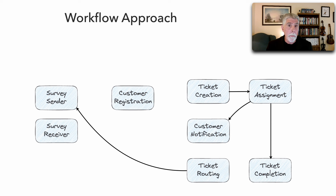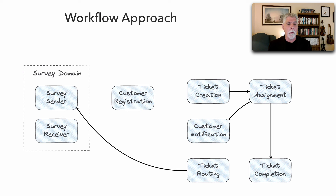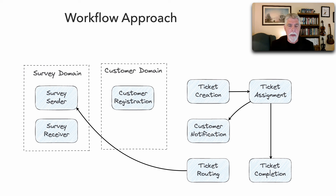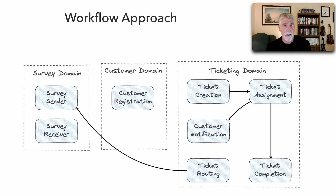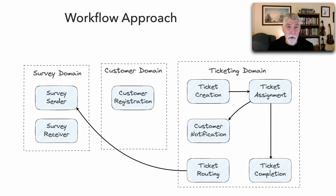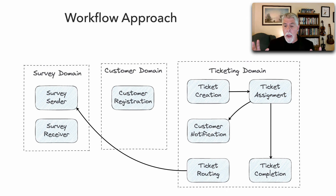Once we start identifying these components, we can build our logical architecture diagram showing user interactions and interactions between components. We can then group components by domain — a survey domain, a customer domain, and a ticketing domain. It's important to note that the workflow approach's primary purpose is to create initial core components, knowing they will likely change as we learn more about the system, get more requirements and user stories, and add features. This is a solid approach for creating an initial logical architecture that we can iterate on.